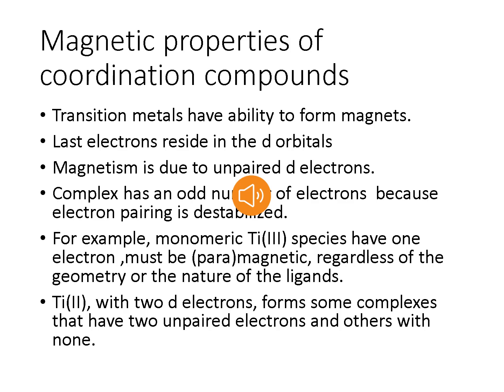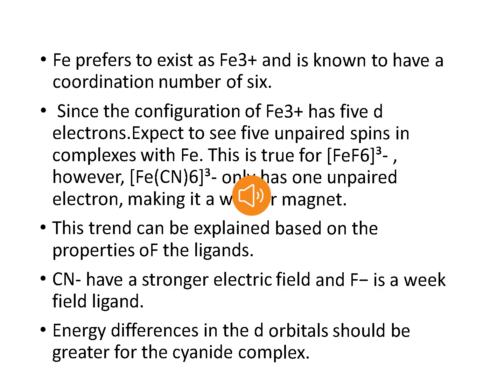If we take the example of titanium(II), which has two d electrons, it forms some complexes that may have unpaired electrons and others with none. Iron prefers to exist as Fe³⁺ and is known to have a coordination number of 6. Since the configuration of ferric iron has 5 d electrons, we expect to see 5 unpaired spins in complexes with iron.